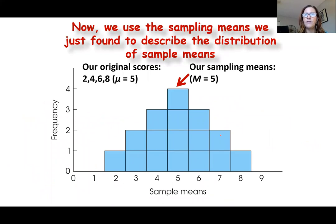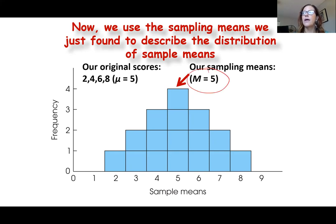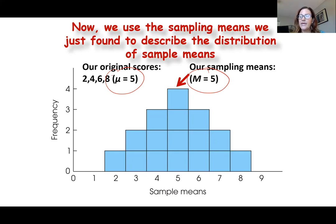Once we create all possible random samples and calculate all their means, we make the distribution out of those means — not raw scores. If we add up all 16 means and divide by 16, our sampling mean equals 5. And if we add up 2, 4, 6, and 8 and divide by 4, our population mean is also 5. The sampling distribution peaks at the population mean — it reflects the population.